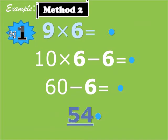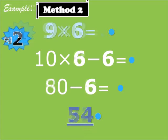We have nine times six. So it's 10 times six, that is 60. You take away six — that is 54. Very easy. Nine times six is 10 times six, that is 60. Take away six — that is 54. So nine times six is 54.